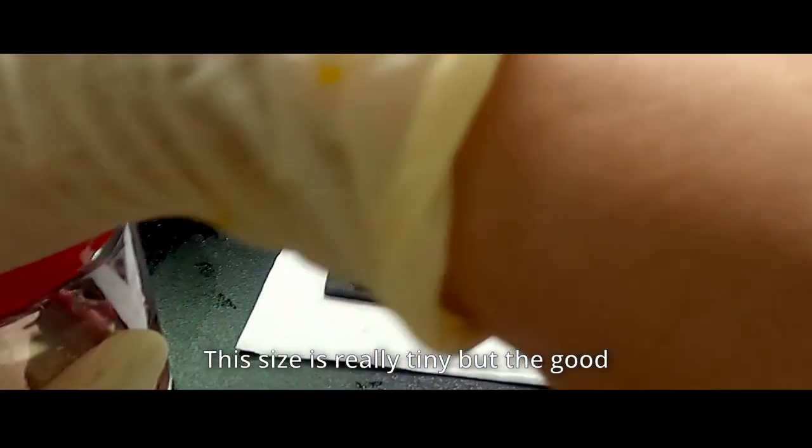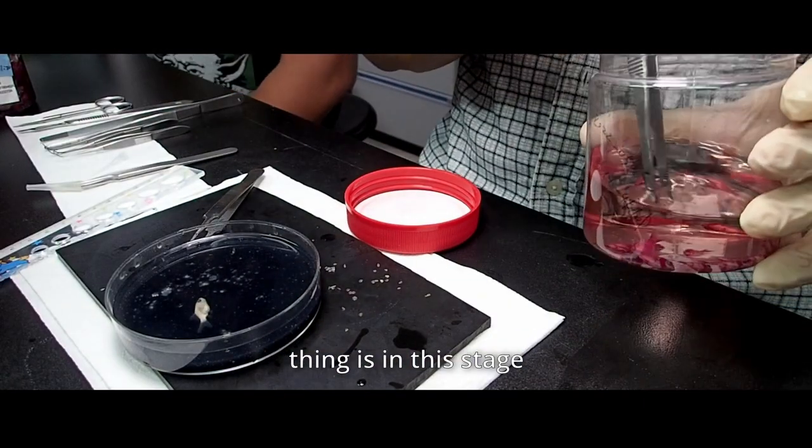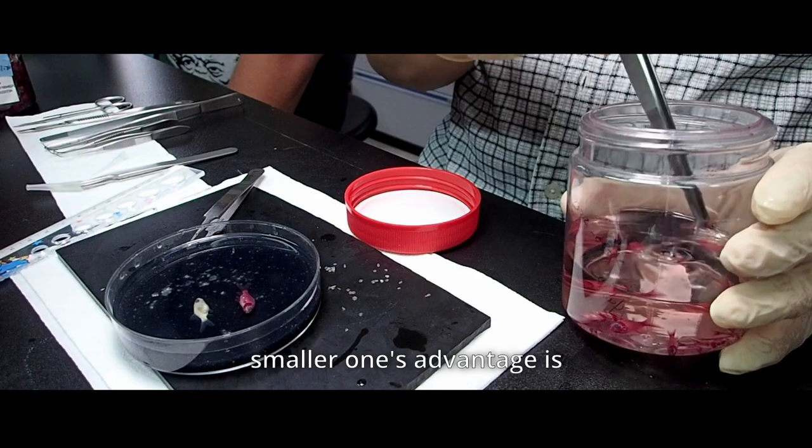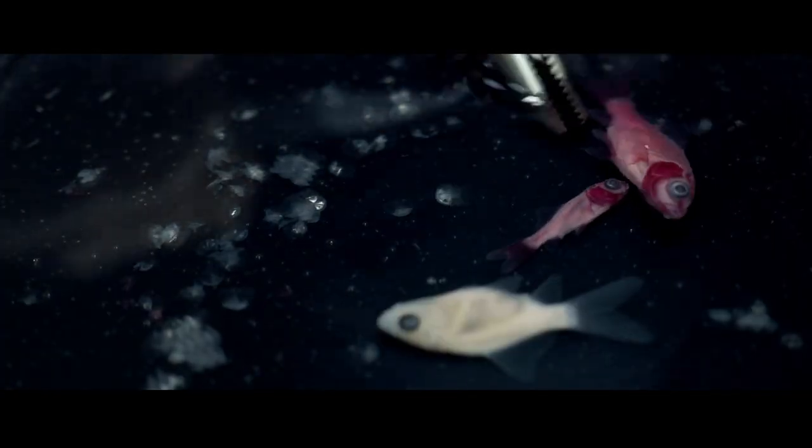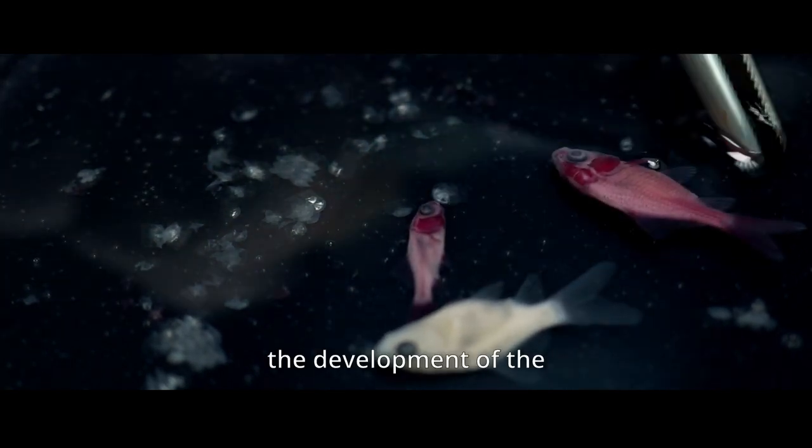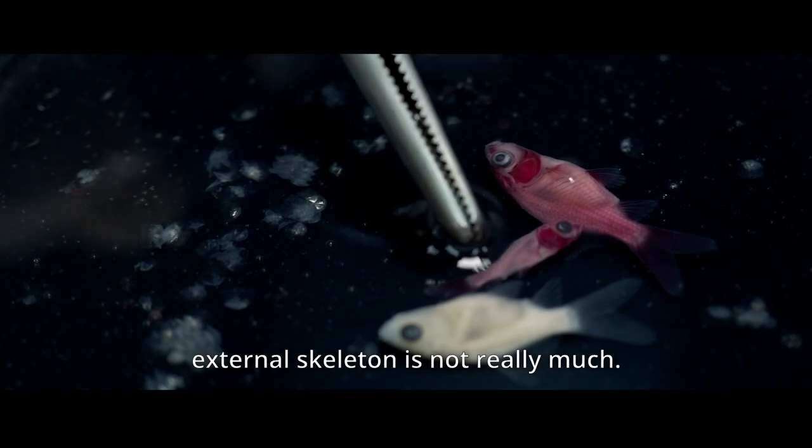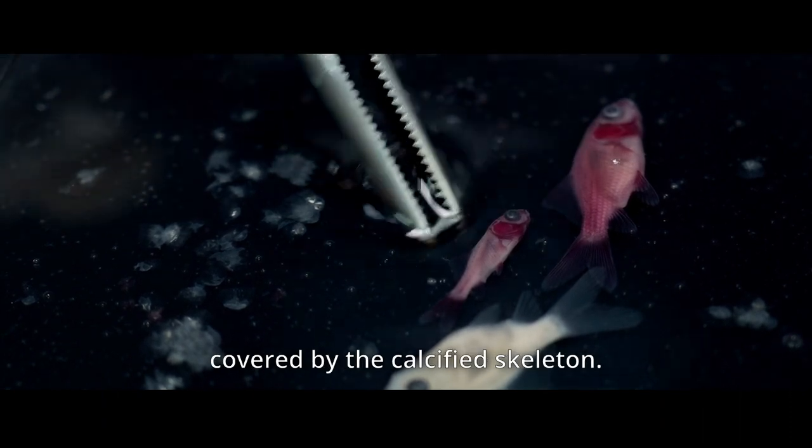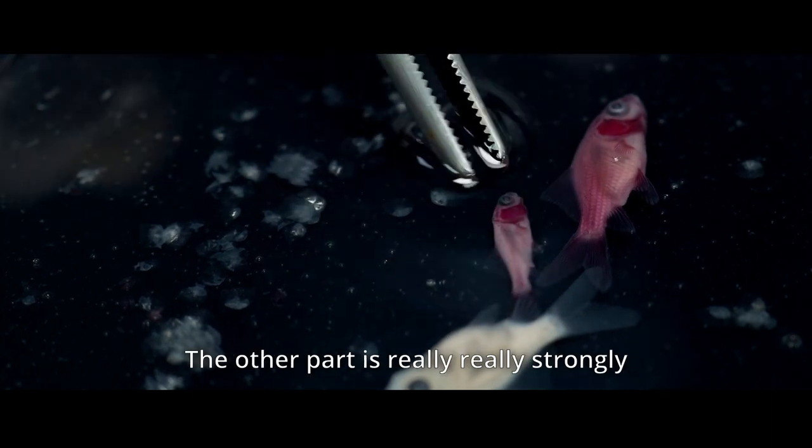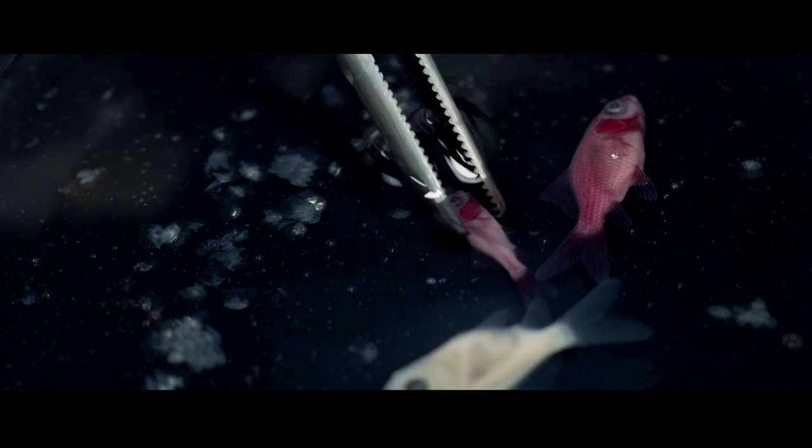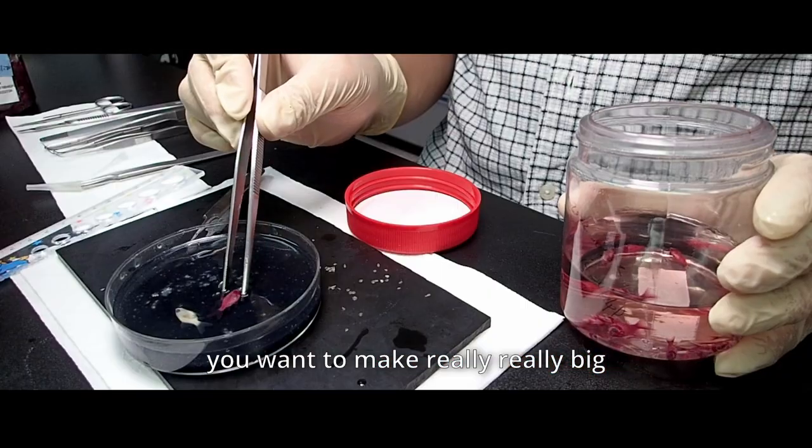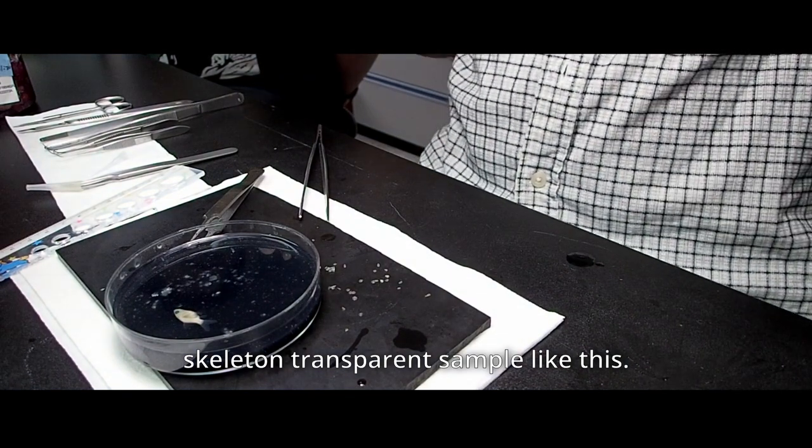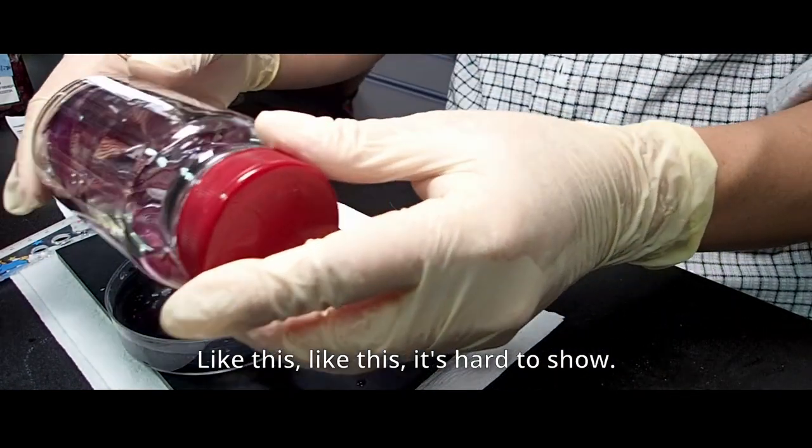This size is really tiny, but the good thing is, in this stage, when you stain the samples with alizarin red, you can see that, like I think much smaller ones, the advantage is the development of the external skeleton is not really much. And this size, this size is obvious. The surface is not really strongly covered by the calcified skeleton. And the other part is really strongly stained with alizarin red. Then, it's depending on the purpose. You want to make really big skeleton transparent sample like this.